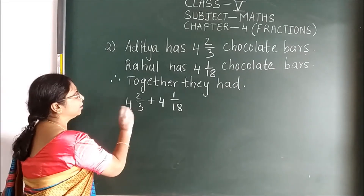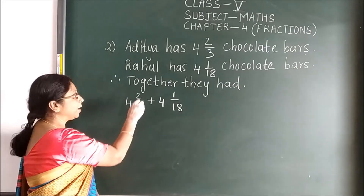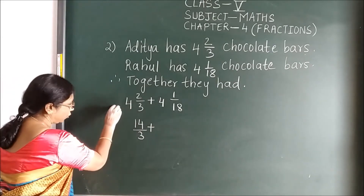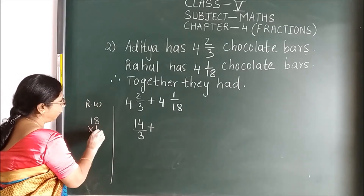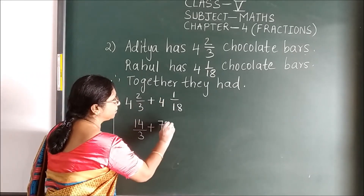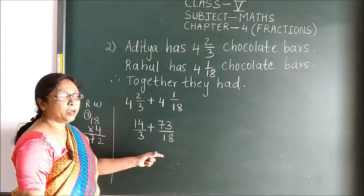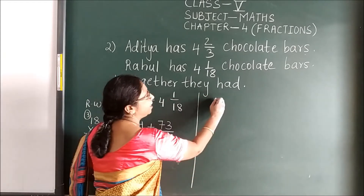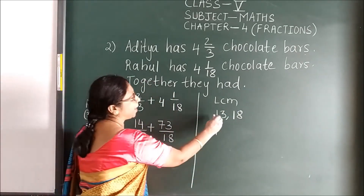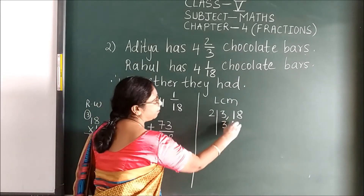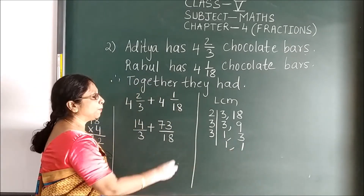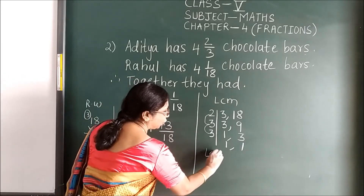First convert to improper fractions: 4 and 2/3 = 14/3, and 4 and 1/18 = 73/18. The denominators are different, so find the LCM of 3 and 18. Using prime numbers: 3 as is, then 2 × 9 = 18, then 3 × 3 = 9, then 3 × 1. Multiplying: 3 × 3 × 2 = 18. So the LCM is 18.